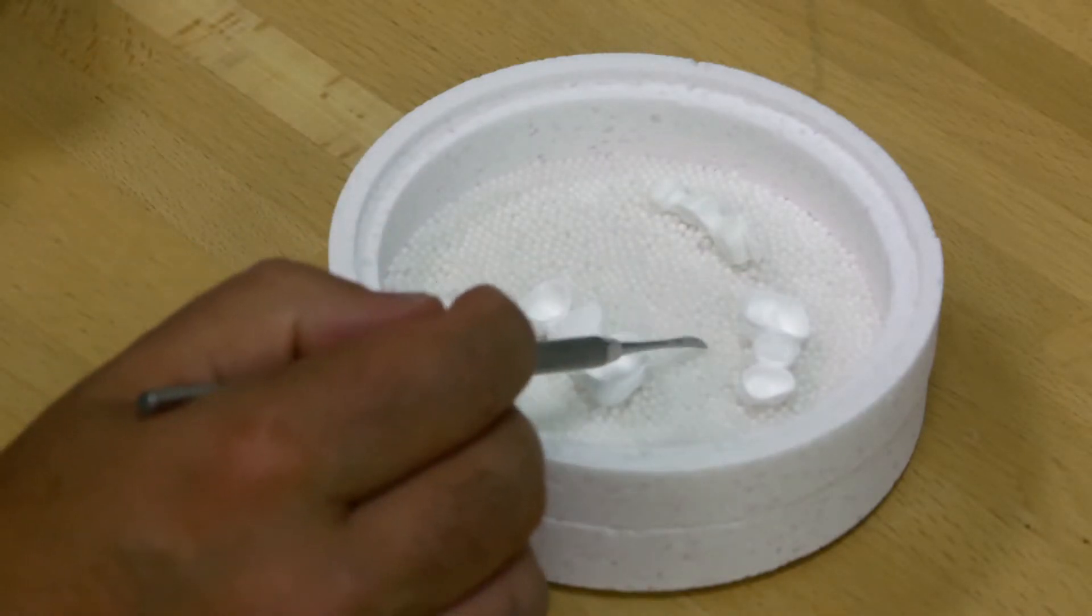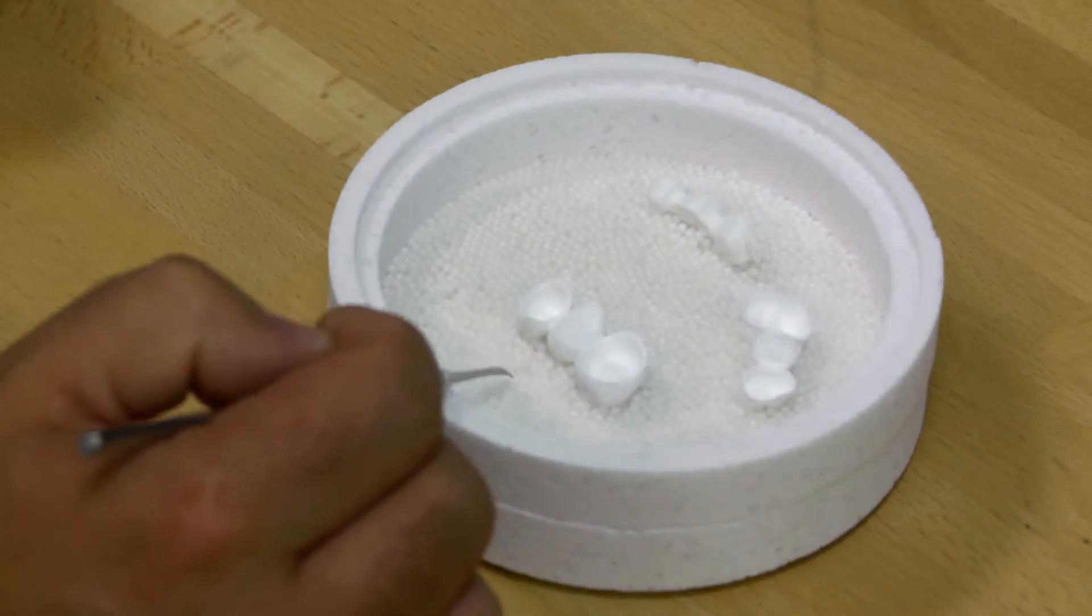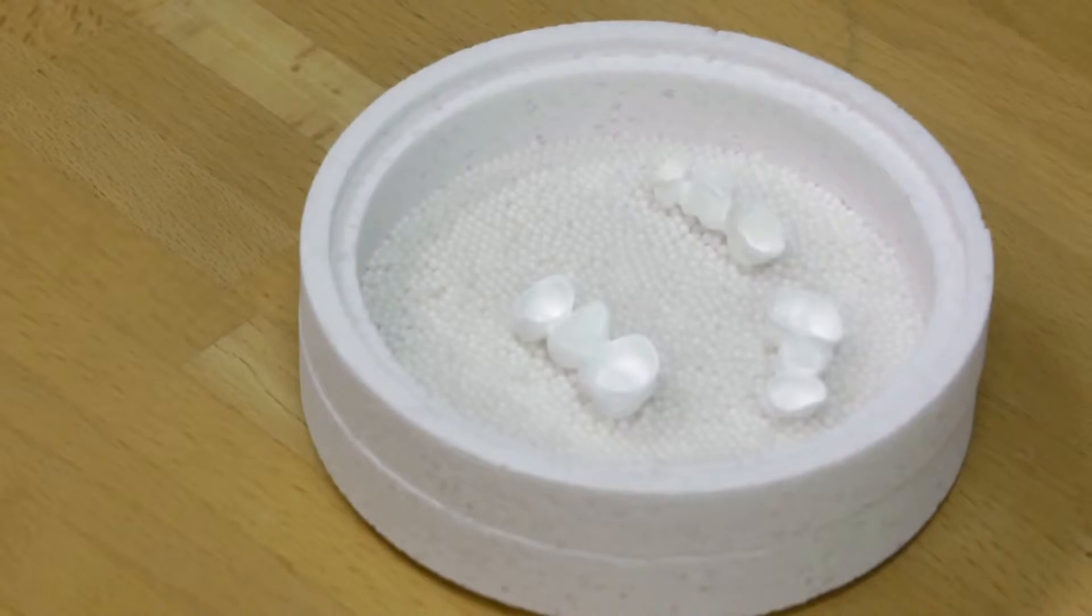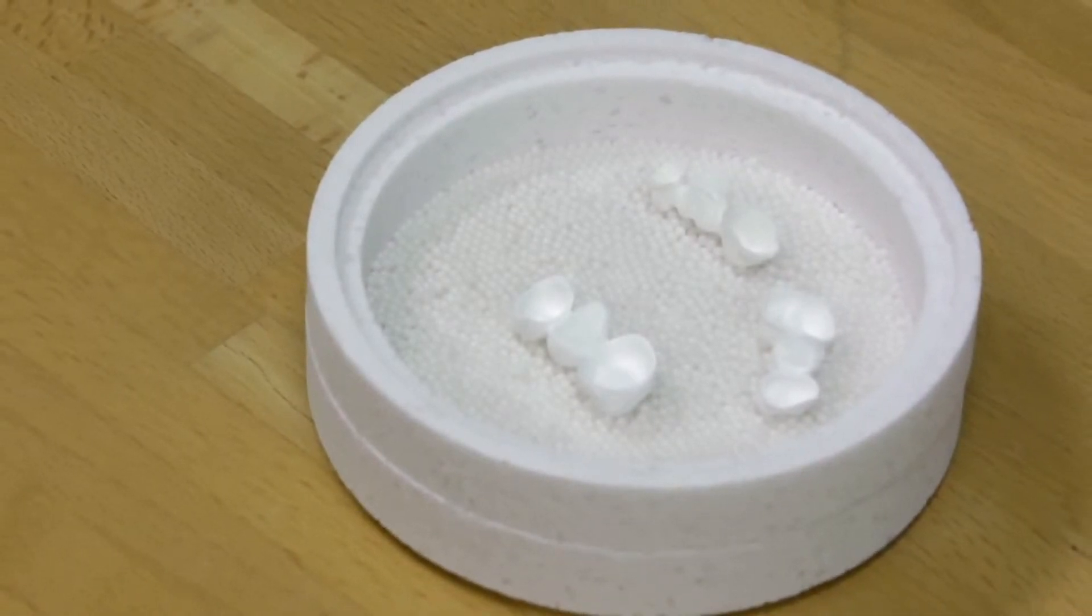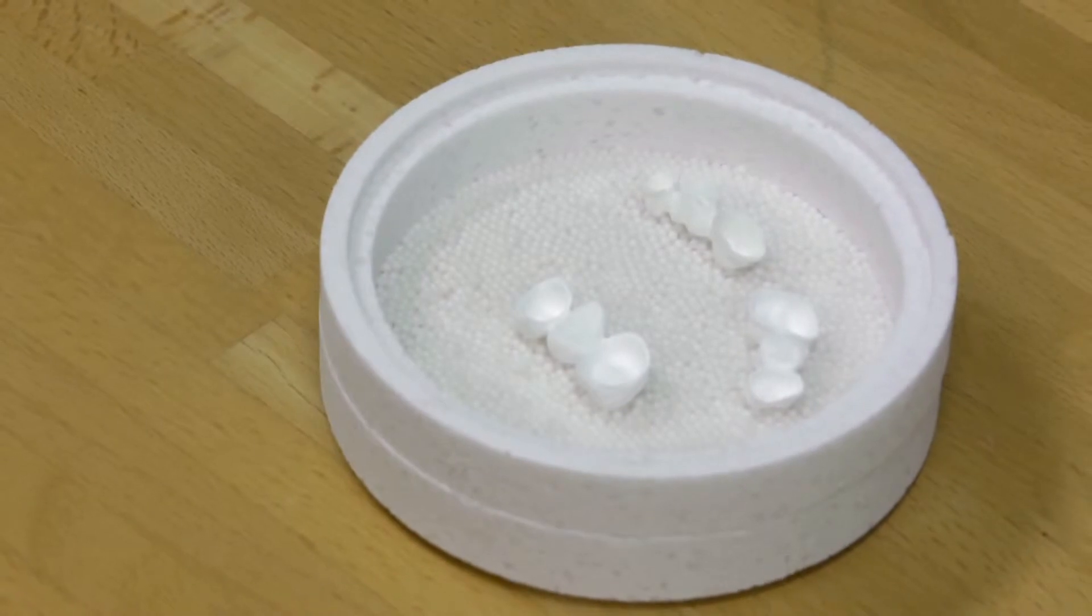If several restorations are sintered at the same time, these must not touch the edge of the sintering tray or each other. In order to prevent the sintering beads from sticking, such as interdentally on the bridge pontic, the restorations must not be pressed or embedded into the sintering beads too hard.